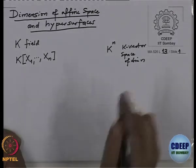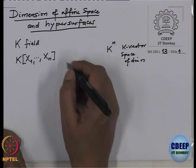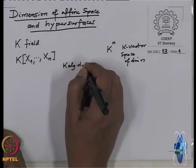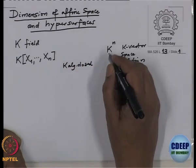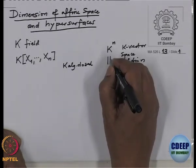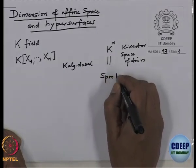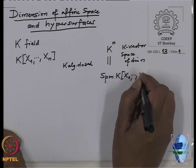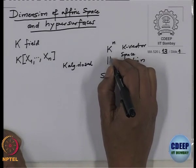We have also seen that if you assume more — K is algebraically closed — then this affine n-space can also be realized as the maximal spectrum of this polynomial algebra. So this is SPM of K[X1, ..., Xn]. So there is an identification here.